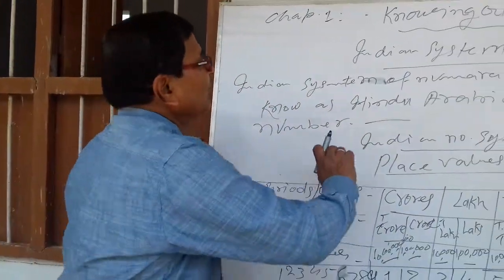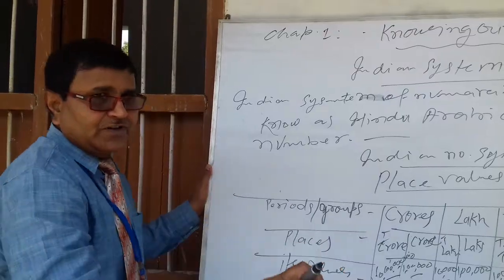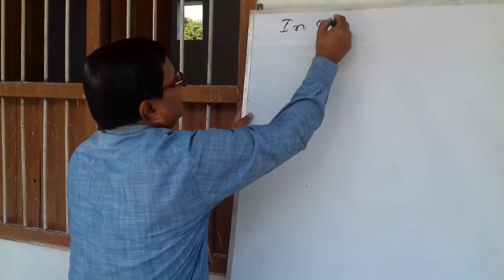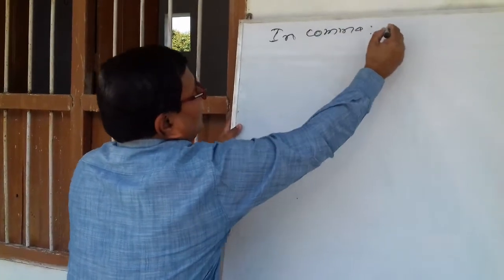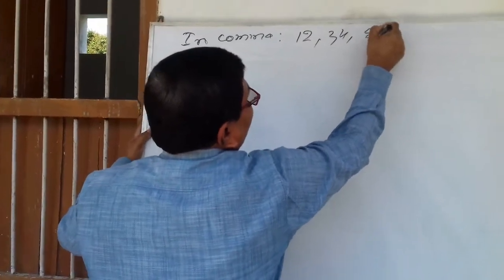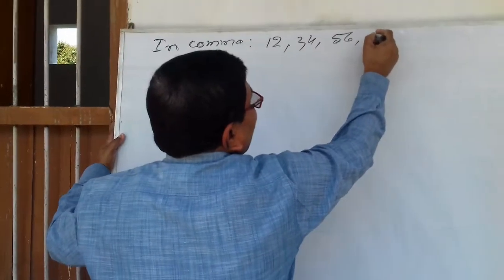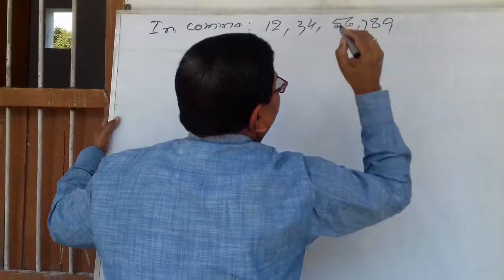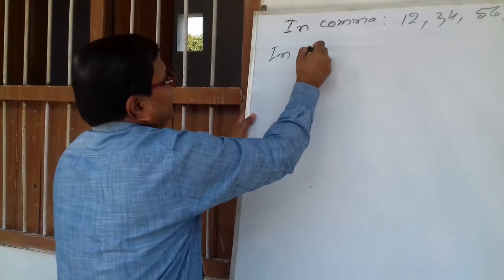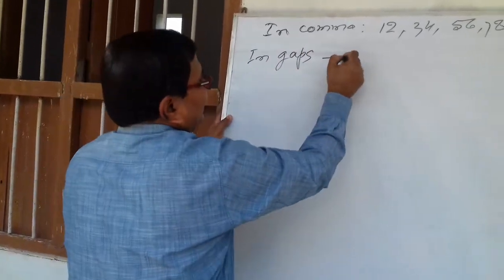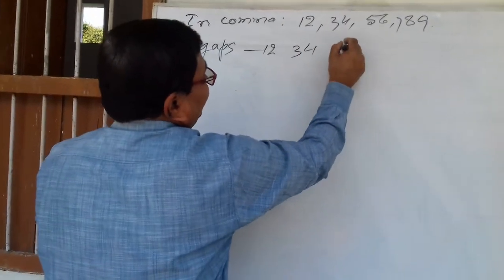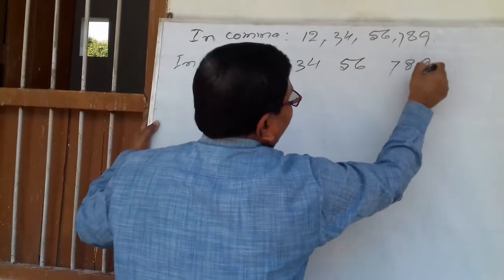Writing expanded form: the number in commas is twelve crores, thirty four lakhs, fifty six thousands, and seven hundred eighty nine. Using the gaps method: twelve crore, thirty four lakhs, fifty six thousand, and seven hundred eighty nine. Now find its place value.